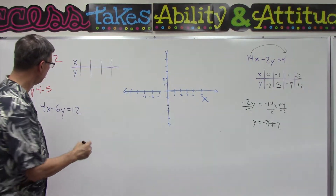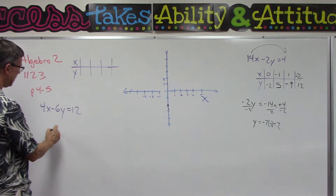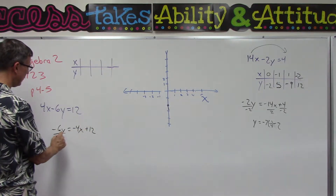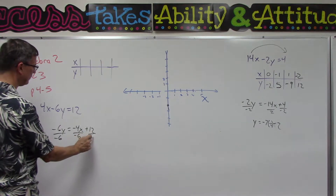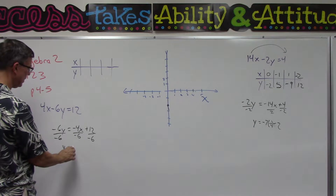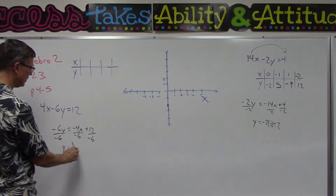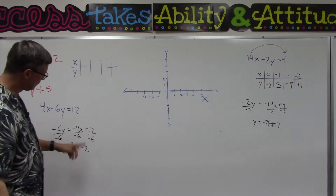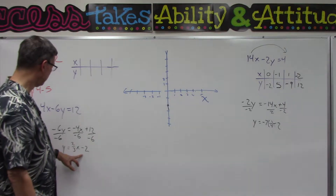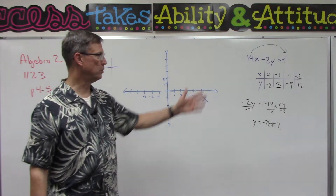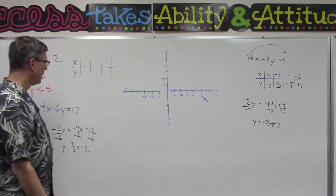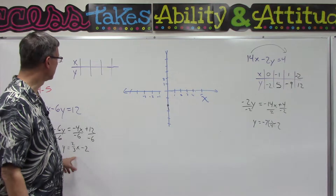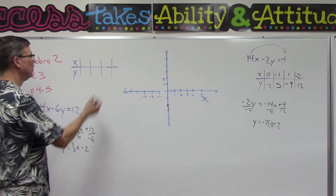Again, we're going to solve for y first. Take 4x to the other side — change sides, change signs. Now divide by negative 6. I get y equals, and I can reduce the fraction: 2/3 x minus 2, because negative 12 divided by negative 6 is 2. Now here's why I did this one — the other three problems are actually easier. But here we have a fraction, so we have to be a little careful about which numbers we plug in for x.